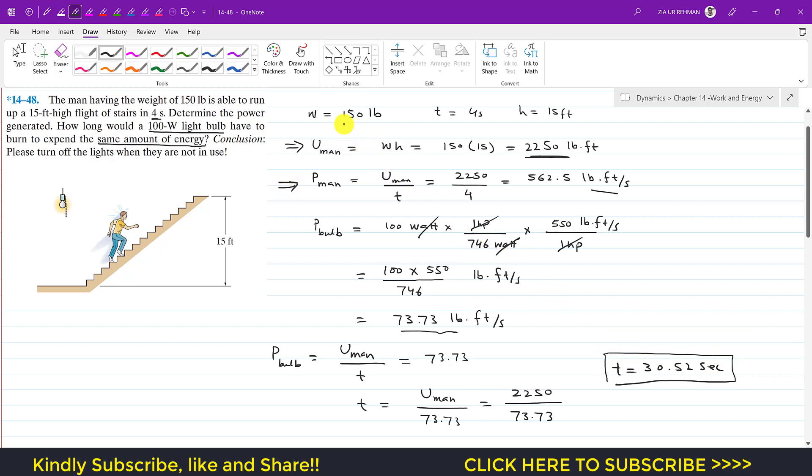So to consume that power which is generated by the man having 150 pound weight will be consumed by a 100 watt bulb for 30.52 seconds. That is why the conclusion for the problem is that please always turn off the lights when they are not in use.